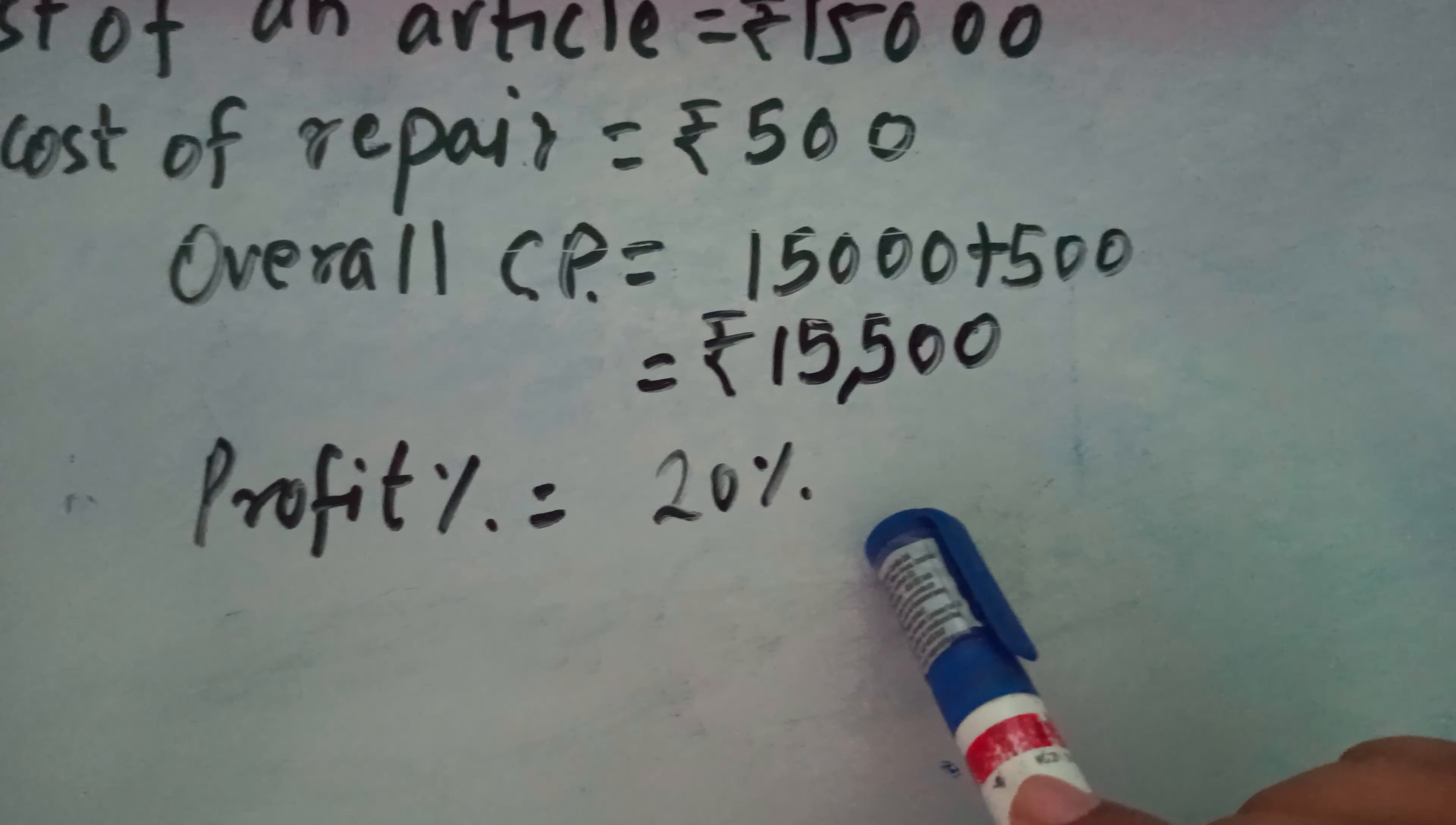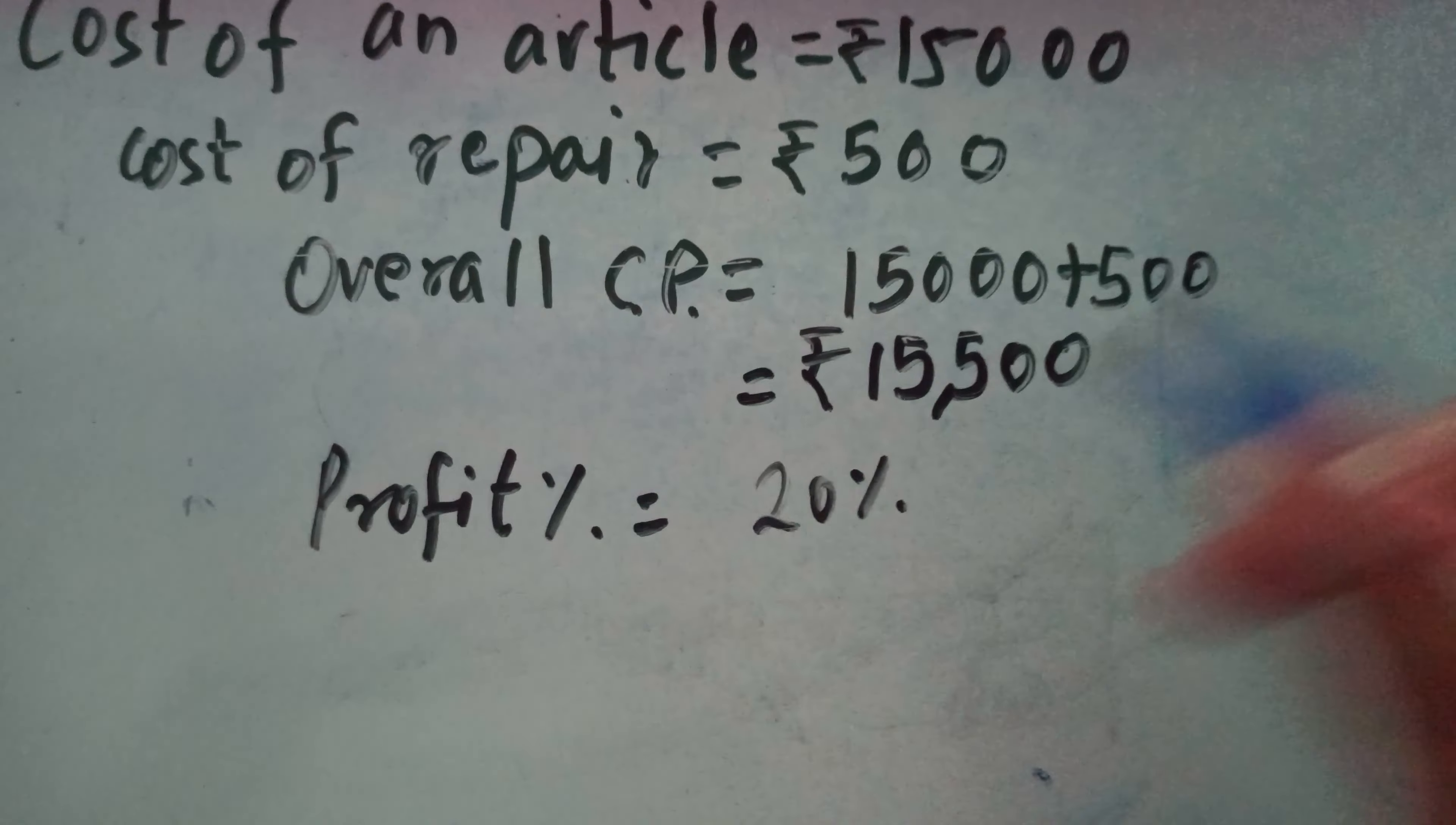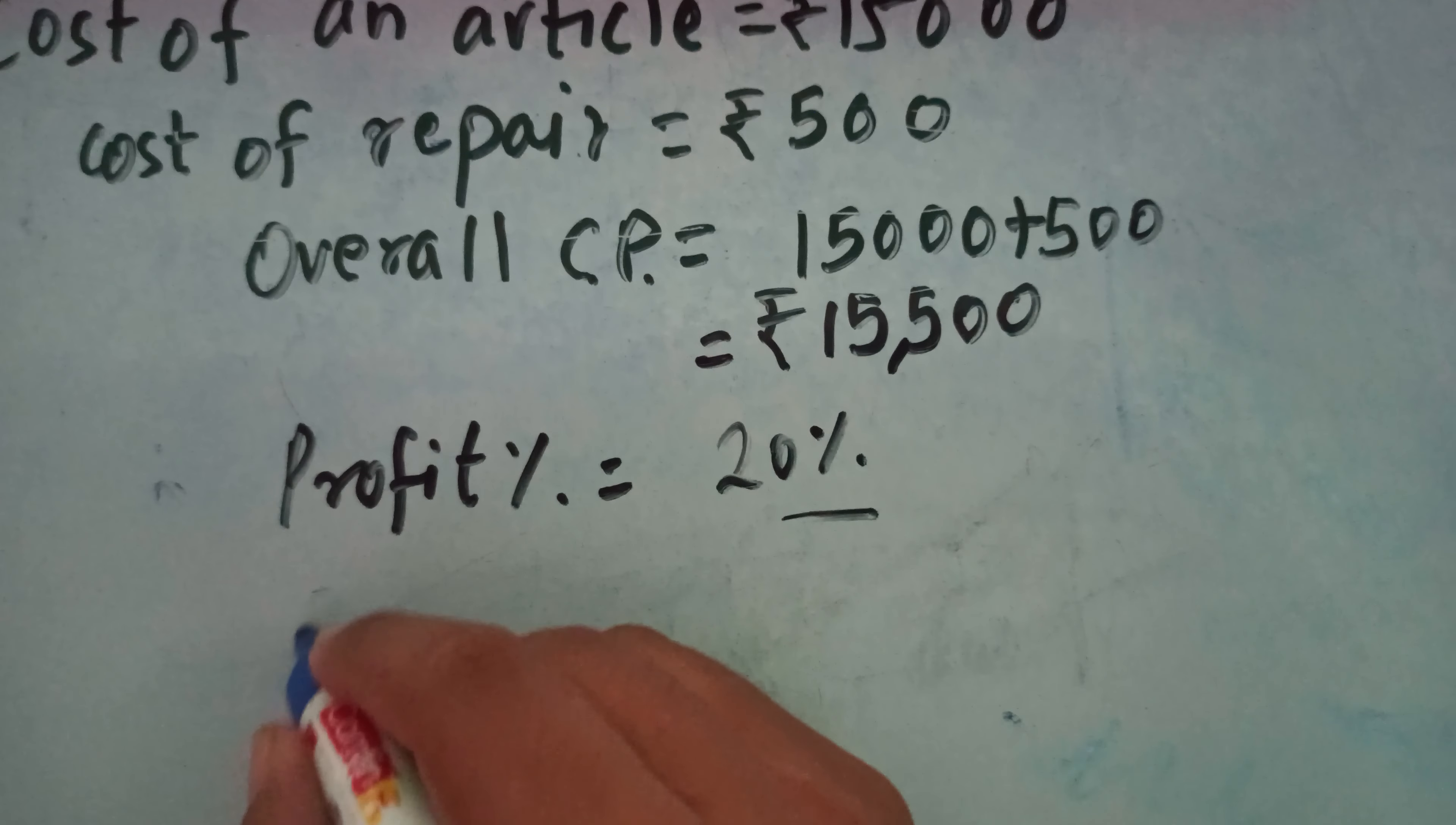Now profit is 20%. If profit is 20%, then we need to find the SP, the selling price. After repairing this article, the profit is 20%, so to find SP...